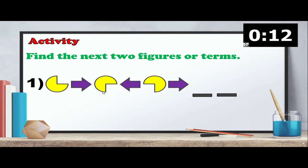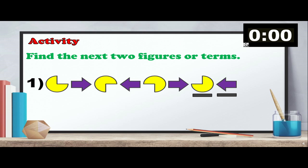Try to observe. The correct answer: the figure is moving in circular motion clockwise, and the arrow direction follows left, right, right, left, right, left.